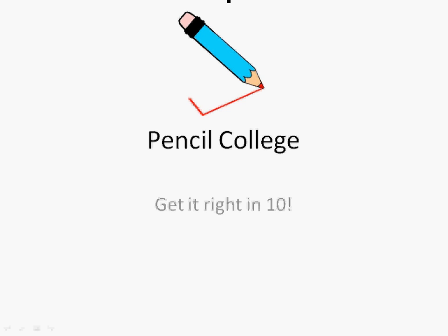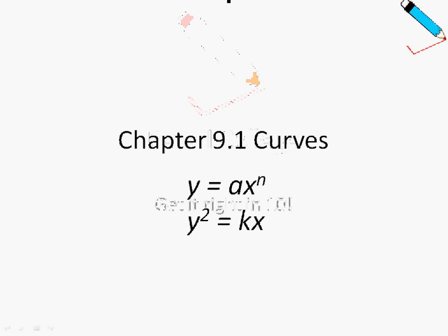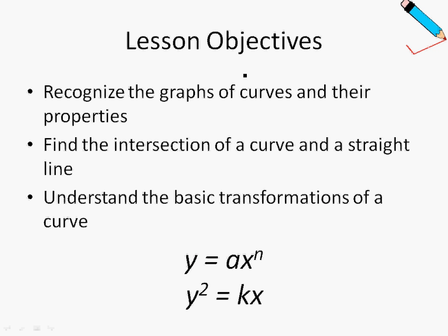Hi guys, welcome to Pencil College. In chapter 9.1, we will be learning about two particular types of curves: one in the form y equals ax to the power of n, and the other in the form y squared equals kx. The lesson objectives for this chapter are to recognize the graphs of curves and their properties, find the intersection of a curve and a straight line, and understand the basic transformations of a curve.